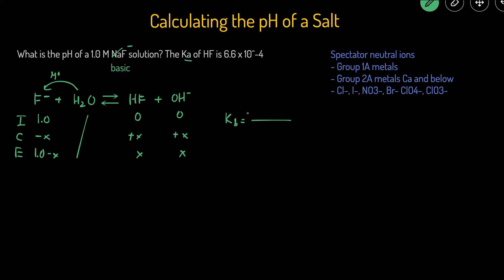The KB expression is the concentration of products divided by concentration of reactants. So this will be X times X, X squared on top, and then the bottom will be 1.0 minus X.